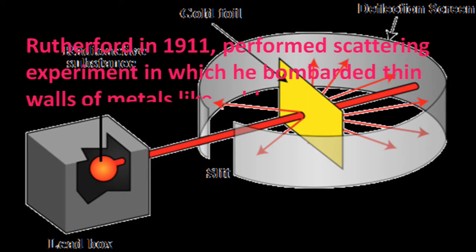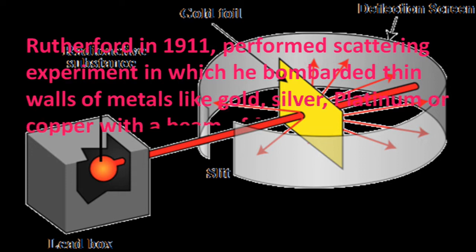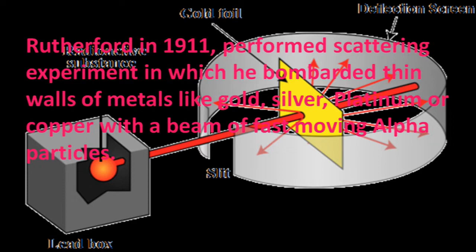Rutherford in 1911 performed a scattering experiment in which he bombarded thin walls of metals like gold, silver, platinum, or copper with a beam of fast-moving alpha particles.